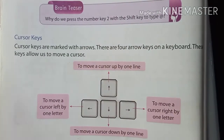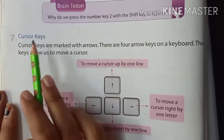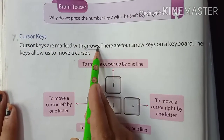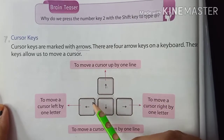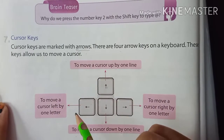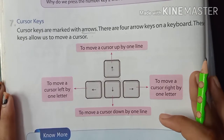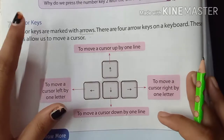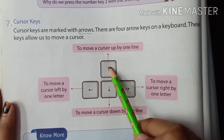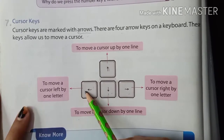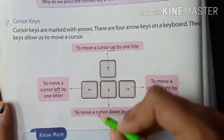Number 7 is cursor keys. Cursor keys are marked with arrows. There are four arrow keys on a keyboard: up, down, left, and right. These keys allow us to move the cursor. The cursor can also be moved with the help of a keyboard using these cursor keys — up arrow to move up, down arrow to move down, left arrow to move left, and right arrow to move right.